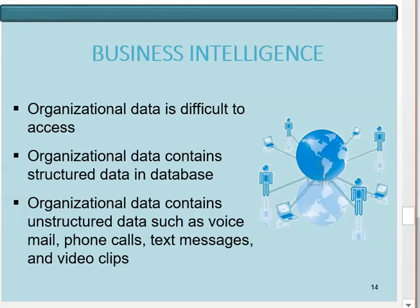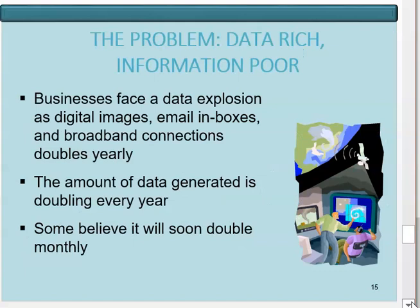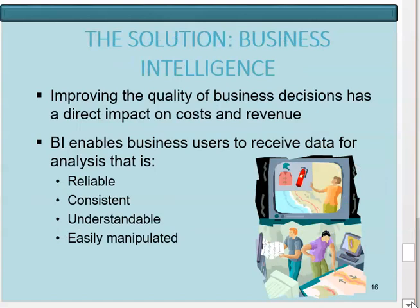An ideal business intelligence scenario: a business manager meets with a client and uses historical customer data, noticing that the client's ordering volume has substantially decreased. He drills down into the data and notices the client had a support issue with a particular product. He quickly calls the support team and learns a replacement for the defective part can be shipped in 24 hours. This is only possible because rich data information is available. Organizational data contains both unstructured data — such as voicemails, phone calls, and text messages — and structured data in databases. Improving the quality of business decisions has a direct impact on cost and revenue.